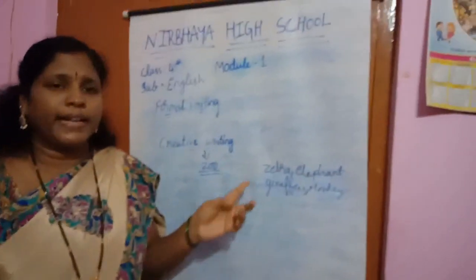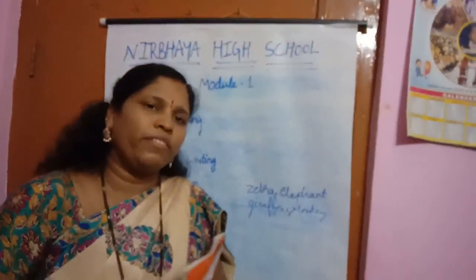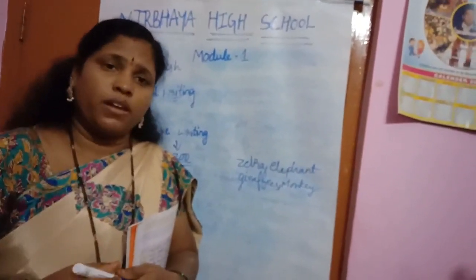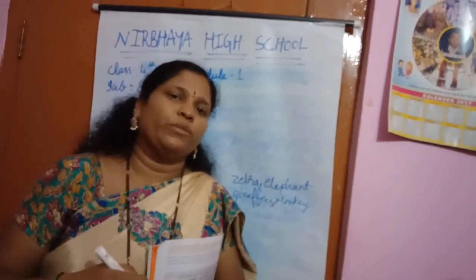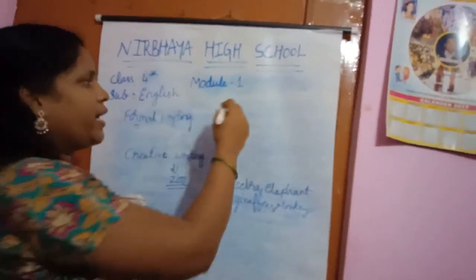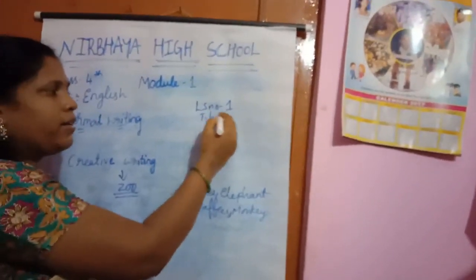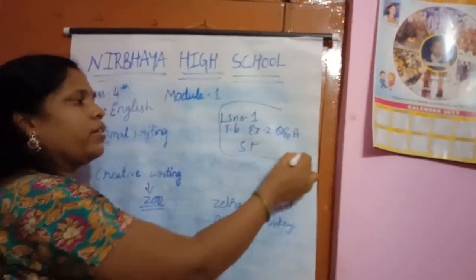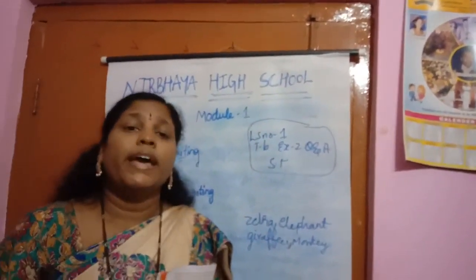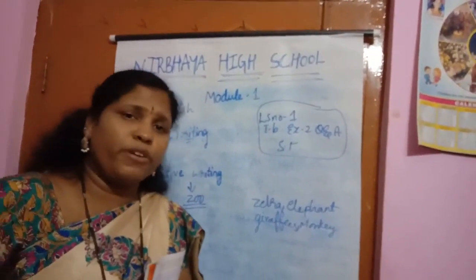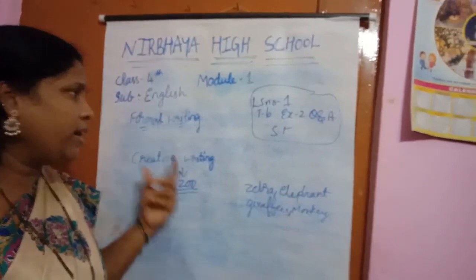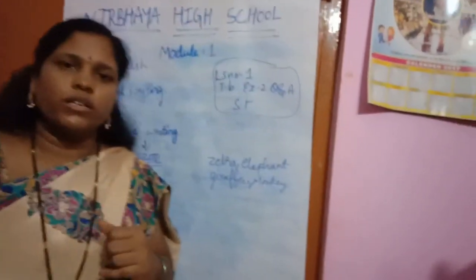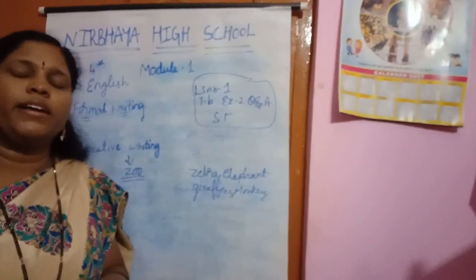We have completed both creative writing and formal writing. Yesterday we completed formal writing; today we completed creative writing. Everyone should see the picture and describe it. Tomorrow I want to conduct an ST — surprise test — for you. Lesson number one, textbook part, exercise two, question answers — I will conduct the ST tomorrow. Remember this. By completing this, we have finished module one in the workbook. Write it in your workbook, children.